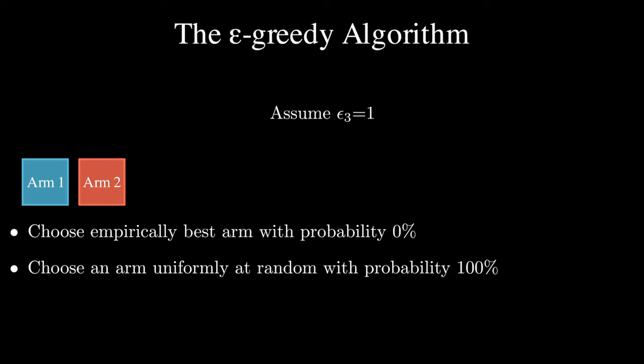In this example, let's assume epsilon 3 equals 1, which means that we have 100% chance of choosing an arm at random. Here in this example, we randomly choose arm 2.